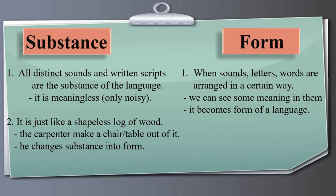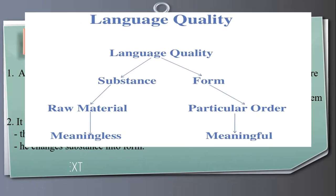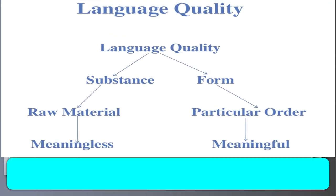In this picture you see language quality. This is totally meaningless and this is meaningful. These letters are changed into words and the phones are changed into phonemes, into meaningful chunks. This is the difference between substance and form.